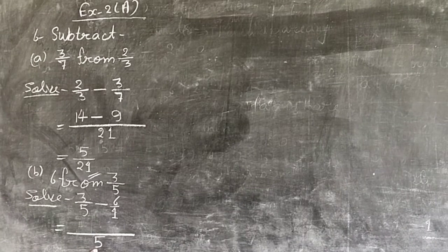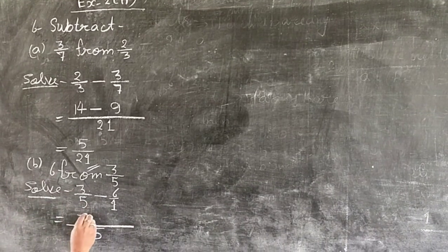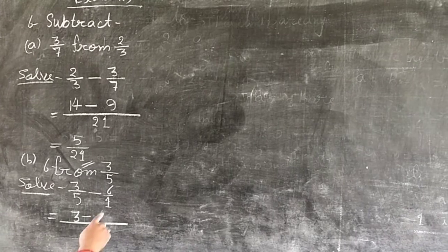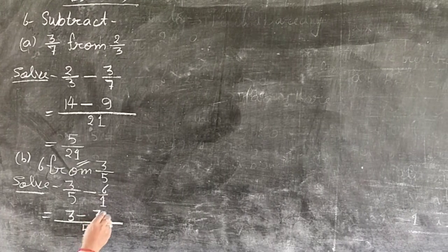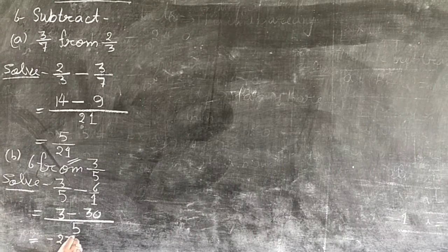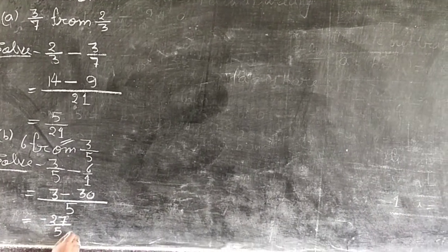5 times 1 times 3 equals 3, minus 1 times 5 times 6 equals 30. So 3 minus 30 equals minus 27 upon 5. Answer.